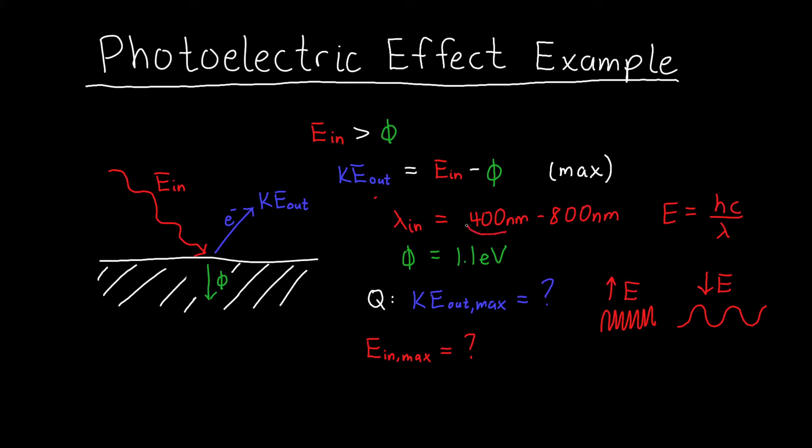So to find our maximum kinetic energy, we want to use the minimum wavelength. And so our maximum input energy is hc over 400 nanometers. Now if you want a numerical answer for this, h and c are just constants, so you can look them up. Now I happen to know, and this is a very useful thing to remember for these types of problems, that hc is equal to about 1240 eV·nm.